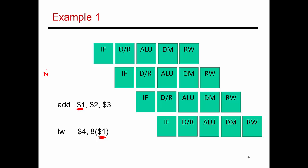Let's start by assuming that there is no bypassing. That means all inputs come from the register file. I've flipped the figure from earlier — now I'm showing one instruction going from left to right in terms of time and the units it passes through. This depiction is a little easier to reason about stall cycles. I1 essentially goes through all these stages and produces a result in $1 in the first half of cycle 5.